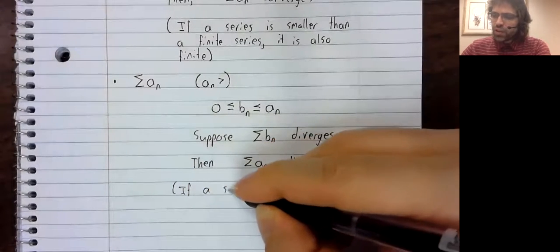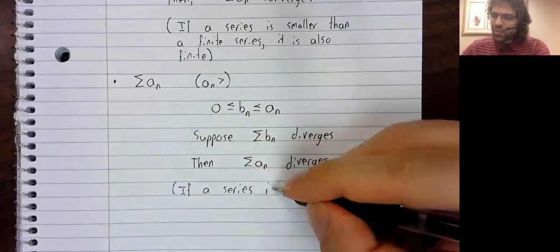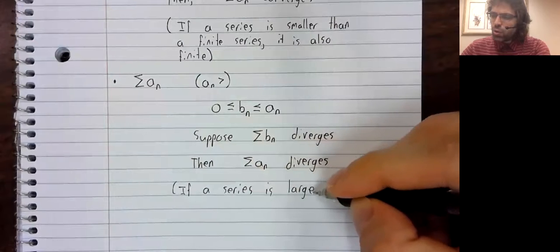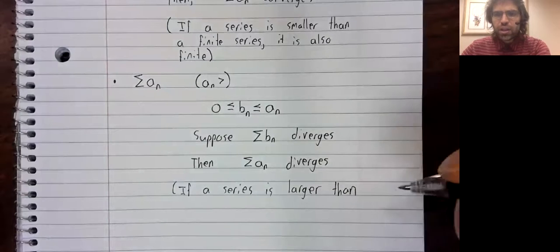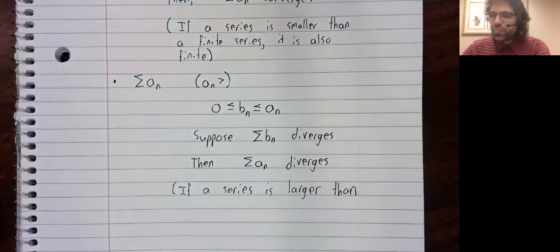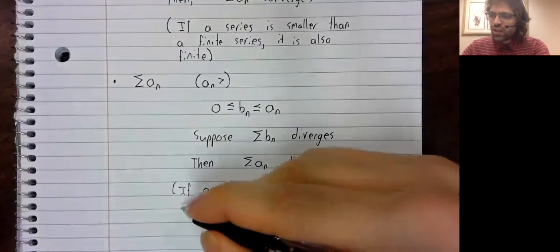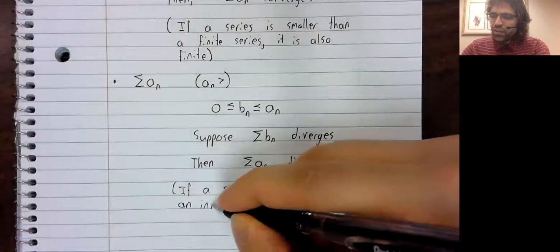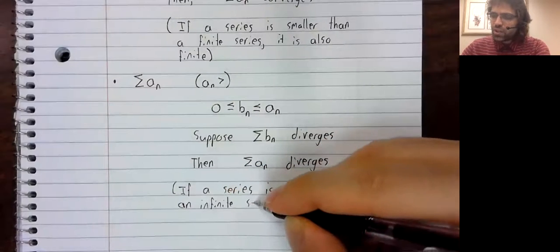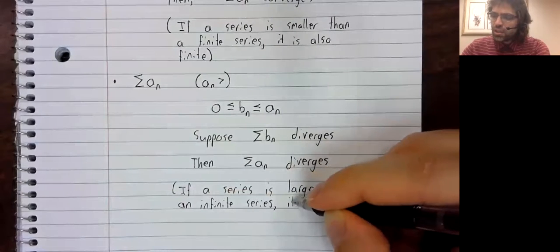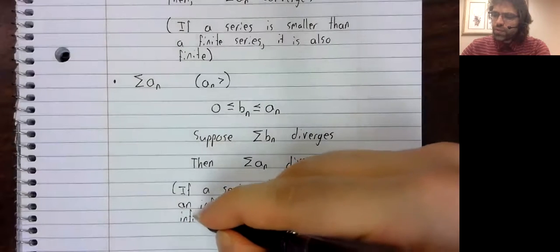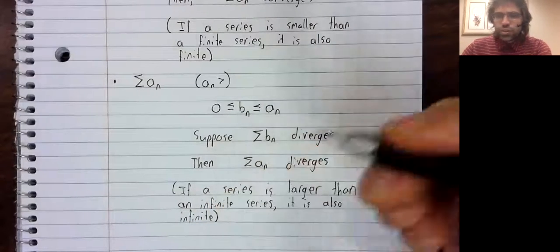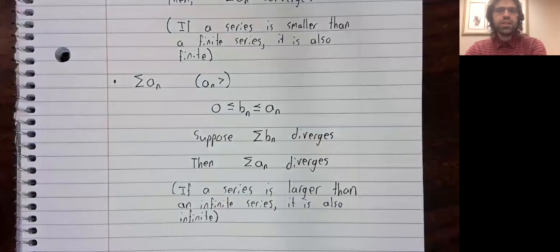Think of a divergent series as infinite. That's a little off, as we saw with Grandi's series, but it will help our intuition. If a series is larger than an infinite series, it is also infinite. You cannot have a finite quantity be larger than an infinite quantity.